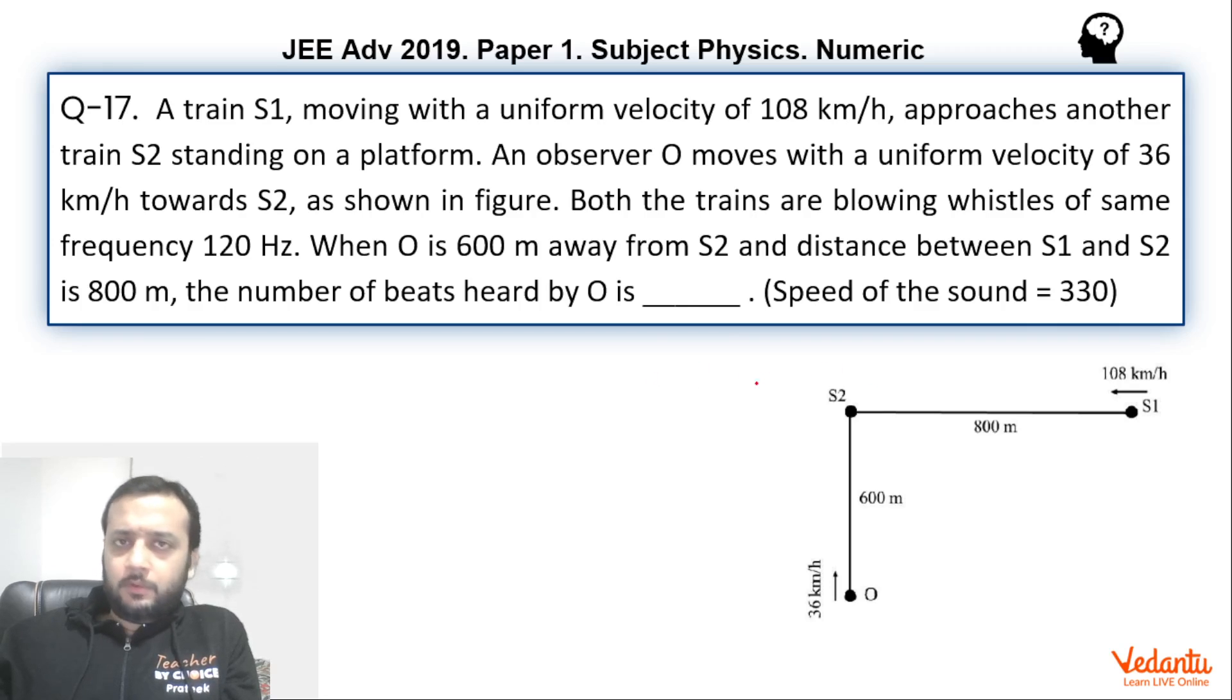In this video, I will be talking about the solution of this question and the assumption that in my opinion IIT should have mentioned and what we would have done if we ignored that assumption. So let's see what's happening. There is an observer who is moving at 36 km per hour and these are two trains. S2 is at rest and S1 is moving in the direction of S2. We have to find the beats observed by the observer.